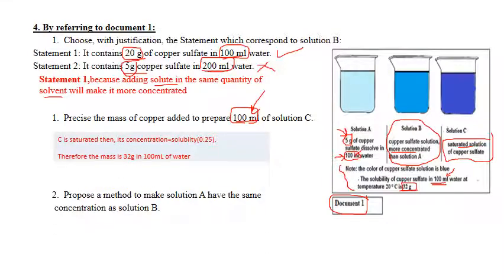Therefore the mass is 32 grams to be added to prepare 100 milliliters of C.